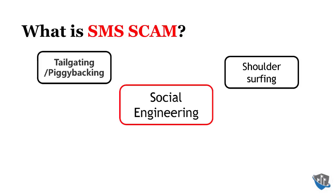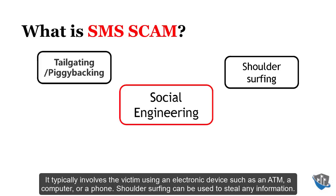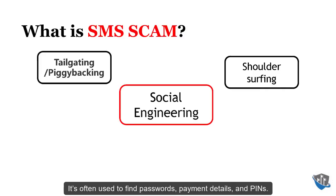Another example of social engineering is shoulder surfing. Shoulder surfing is the act of watching somebody as they reveal private information. It typically involves the victim using an electronic device such as an ATM, a computer, or a phone. Shoulder surfing can be used to steal any information — it's often used to find passwords, payment details, and PINs.